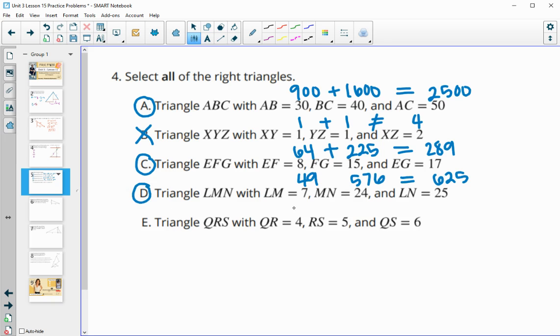And the last one, four squared is 16. Five squared is 25. Six squared is 36. 16 plus 25 does not equal 36. So this one is not a right triangle.